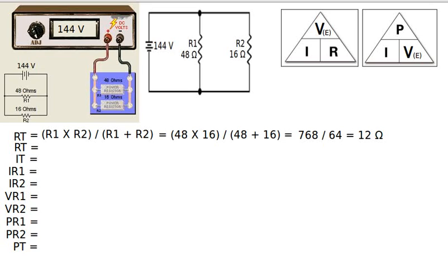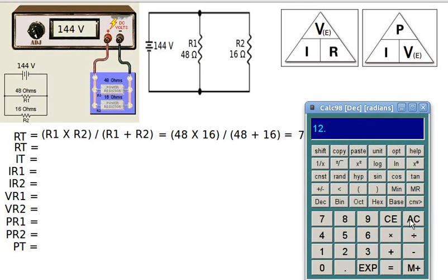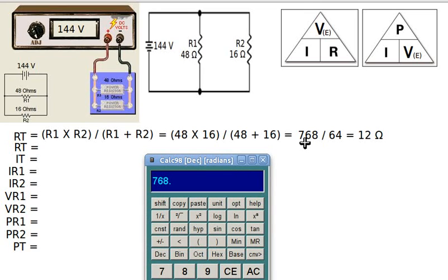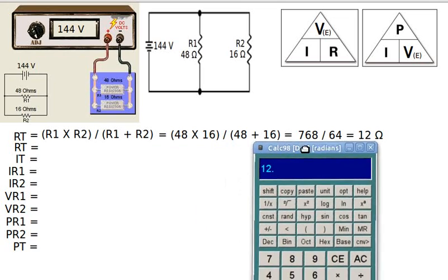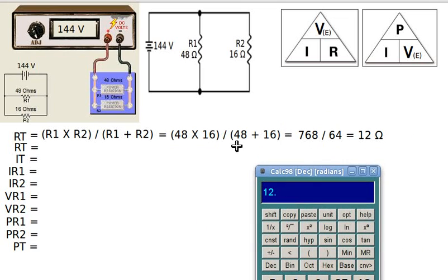Actually, I don't really have to type parentheses for the first calculation. If I do 48 times 16 divided by, I get an intermediate result of 768, and then I use the left parenthesis to force the addition of 48 plus 16 before the division. So use your parentheses keys to group things that need to be calculated before they are divided.